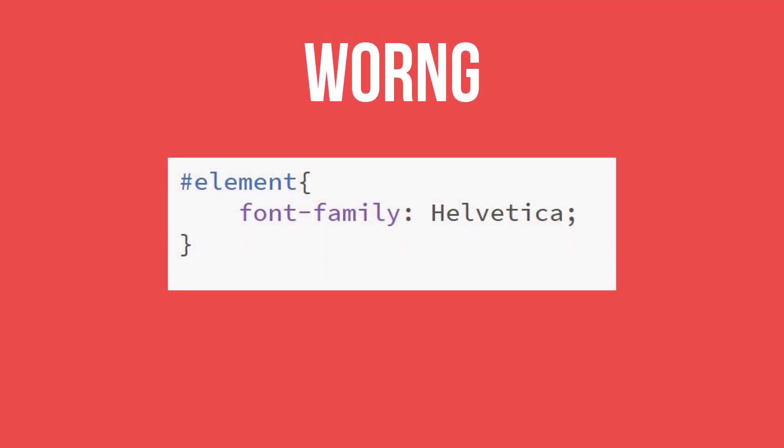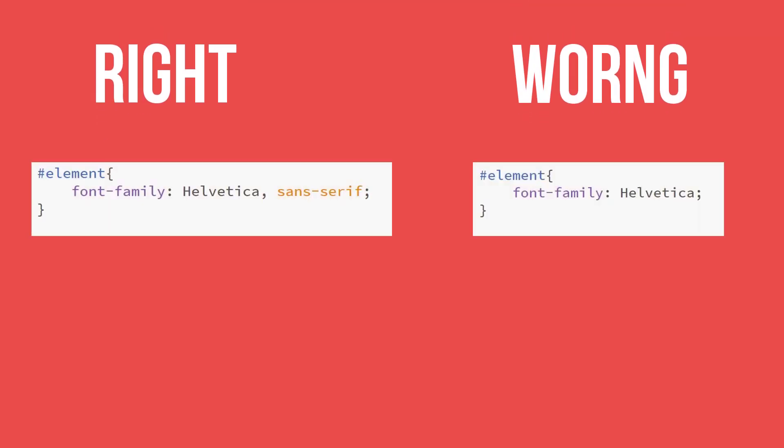Whenever you want to use these fonts, you should use a fallback font. For example, you can use the Helvetica font — whether it's a free or premium font. If you have a problem loading Helvetica, the fallback will prevent your site from looking broken. Without a fallback, Times New Roman might show instead and ruin your design. Since Helvetica is a sans-serif category font, always add a fallback to keep your design intact. I highly recommend adding a fallback font.